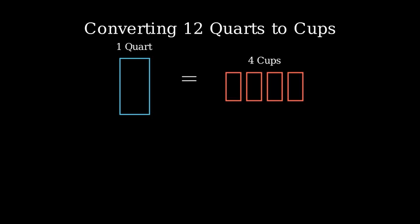To convert 12 quarts to cups, we can use this relationship and set up a multiplication. We'll multiply 12 quarts by the conversion factor of four cups per one quart.